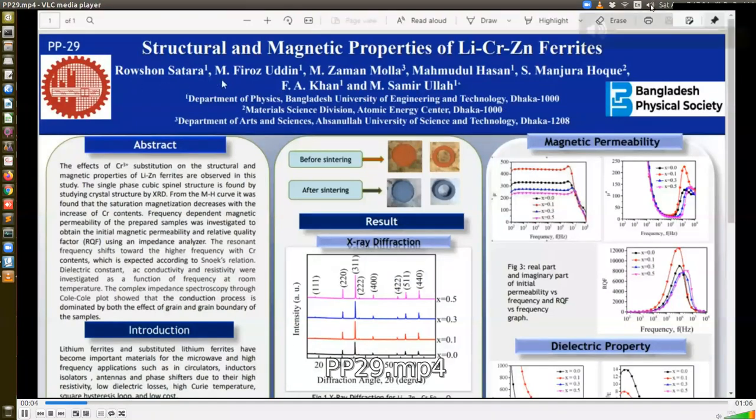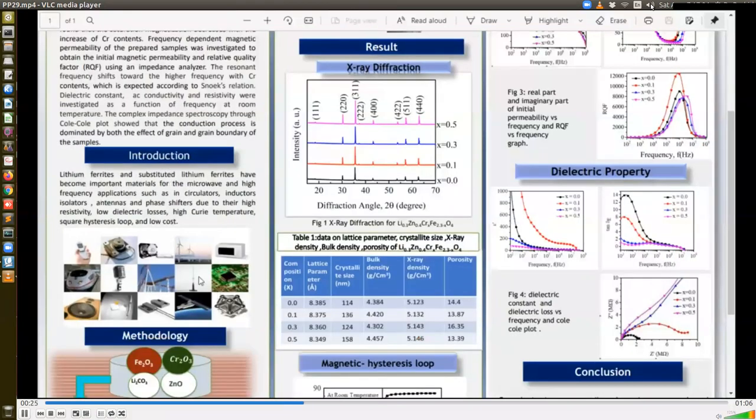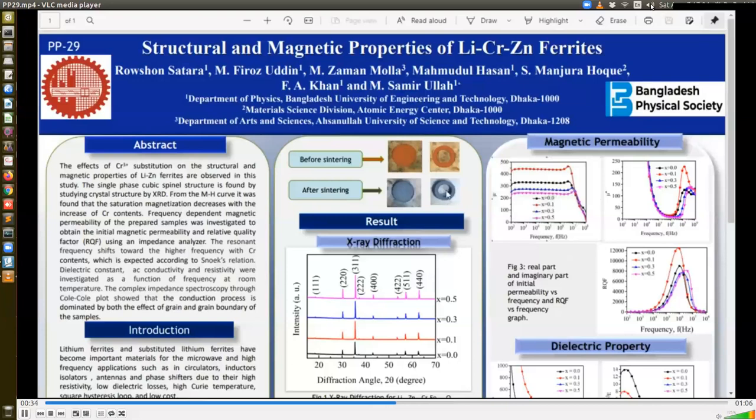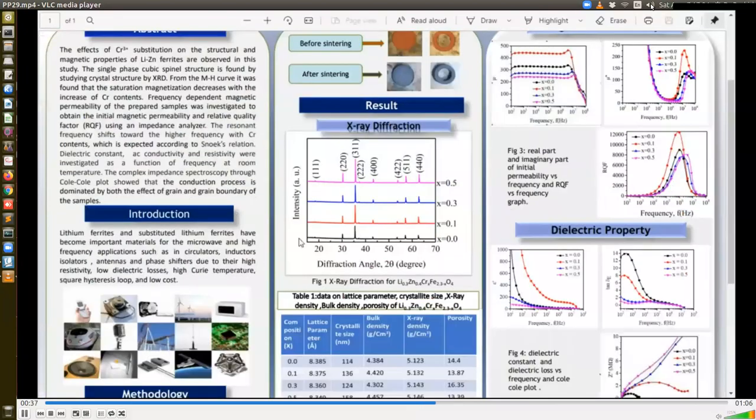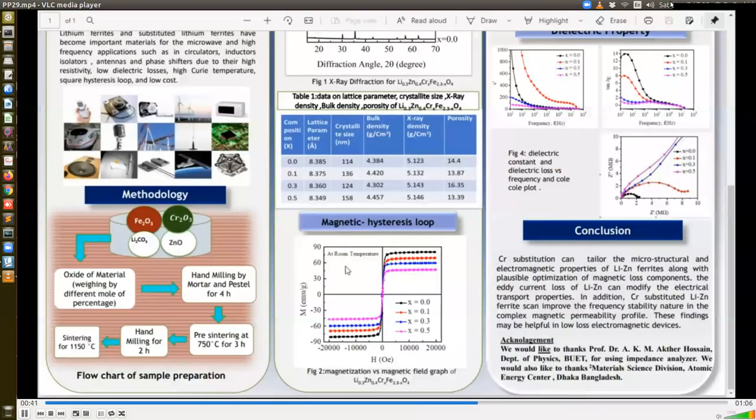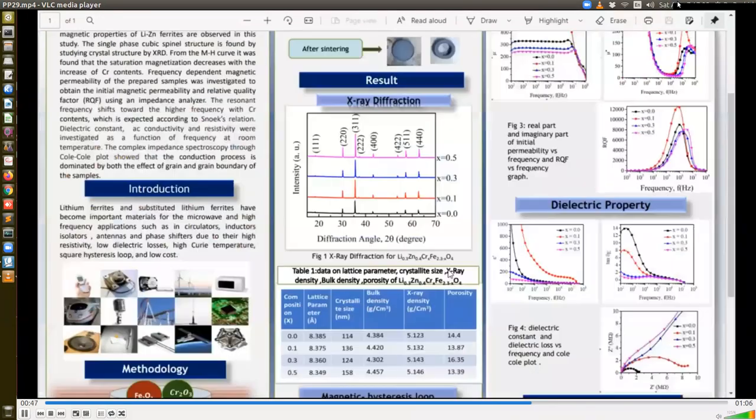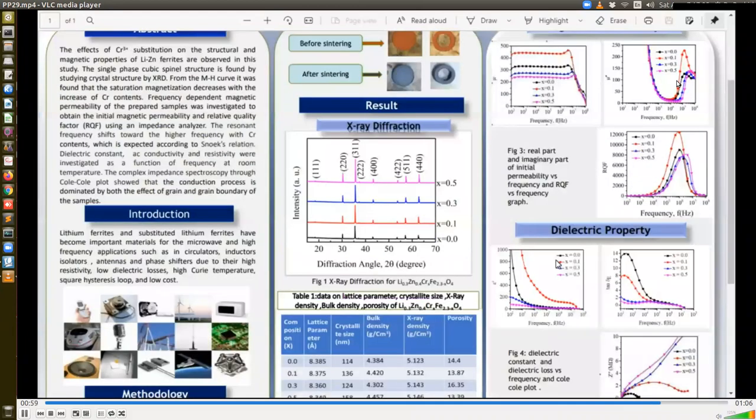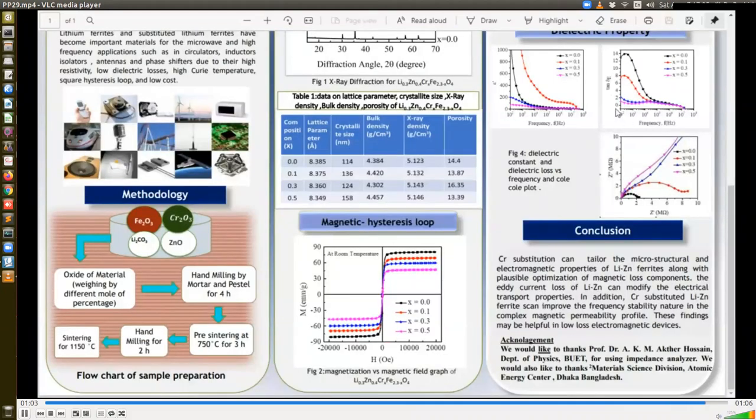Assalamualaikum. I am Raushan Setara, MS student, Department of Physics, BUET. Currently, I am doing research under the supervision of Dr. Mohammad Samir Ullah, Associate Professor, Department of Physics, BUET. We substitute chromium 3+ ion in lithium zinc ferrite to emphasize the microstructure and electromagnetic properties as lithium zinc ferrite has versatile application in microwave and high-frequency region. We preferred solid-state reaction method by heating at 1100 degrees Celsius. The substitution of chromium can enhance the densification of lithium zinc ferrites resulting in easy magnetization process. It is found that chromium can tailor the plausible optimization of magnetic loss components. With the increase of resistivity, the eddy current loss is decreased which can modify the electrical properties. In addition, lithium-chromium zinc ferrite can improve the frequency stability in the complex magnetic permeability profile. The reduction of dielectric loss is also helpful to low-loss electromagnetic devices.